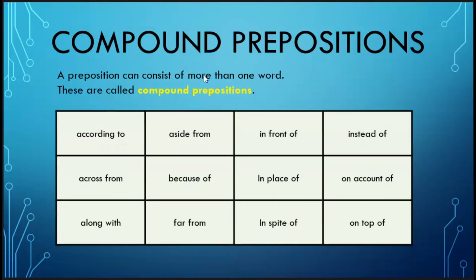Some examples of common compound prepositions: according to, across from, along with, aside from, because of, far from, in front of, in place of, in spite of, instead of, on account of, on top of. You can see many of these are made up of words that might be prepositions on their own. We're just putting them together, and we have a compound preposition.